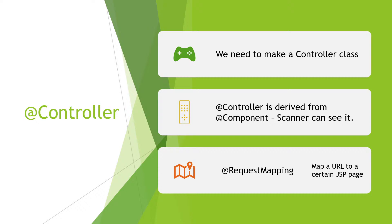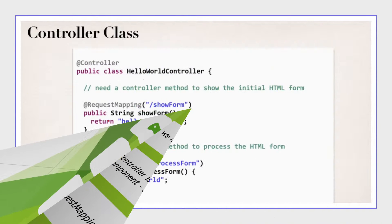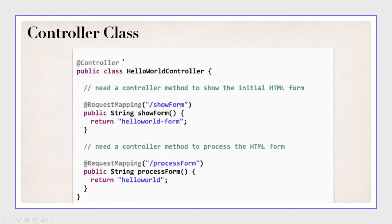We're going to talk a little bit about the @Controller annotation and what it does for us. We need to make a controller class. Controller is derived from components so the scanner can see it. Request mapping is important — you need to map a URL to a certain JSP page. Let's look at this example and then go back into code.